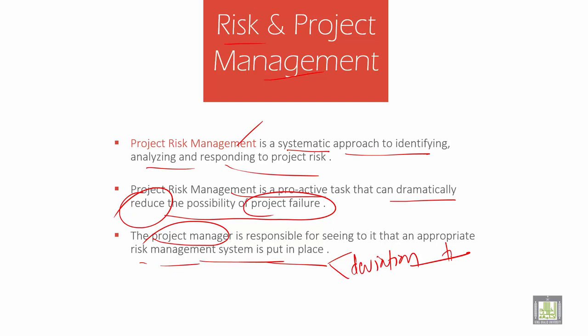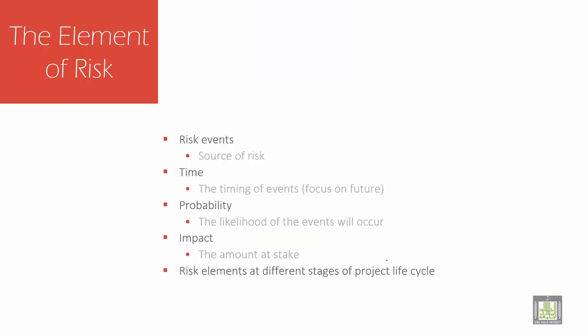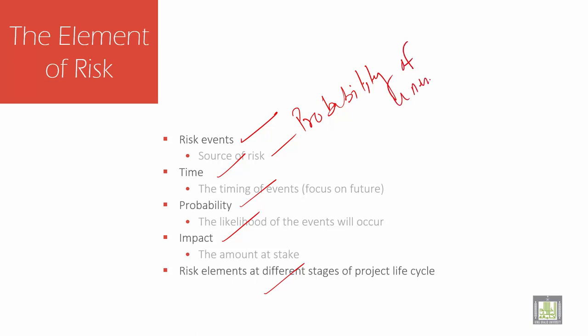So to see that it is not deviated and is within the track of the project. There are events of risk: risk events, time, probability, impact, and risk elements at different stages of the project. Event risk is the probability of an unexpected event that has a potential to negatively impact an organization, sector, or stocks.